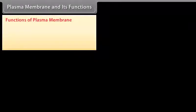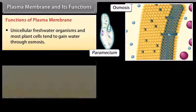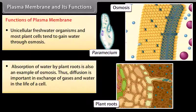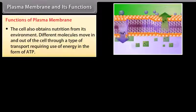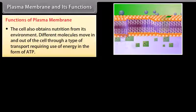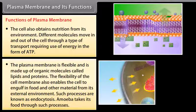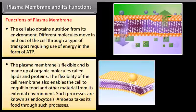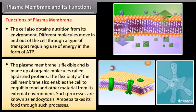Functions of plasma membrane: unicellular freshwater organisms and most plant cells tend to gain water through osmosis. Absorption of water by plant roots is also an example of osmosis. Diffusion is important in exchange of gases and water in the life of a cell. The cell also obtains nutrition from its environment; different molecules move in and out of the cell through a type of transport requiring energy in the form of ATP. The plasma membrane is flexible and made up of organic molecules called lipids and proteins. Its flexibility enables the cell to engulf food and other materials from its external environment through a process known as endocytosis. Amoeba takes its food through such processes.